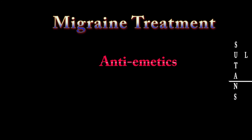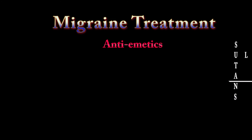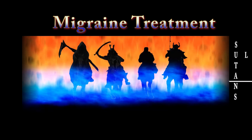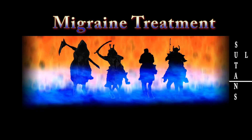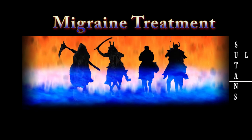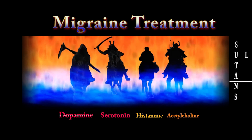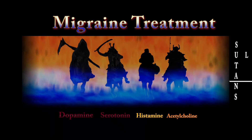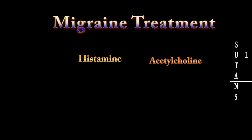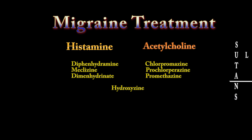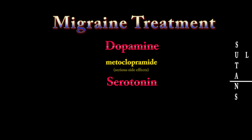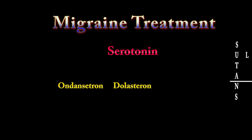Anti-emetics: nausea and vomiting are a common feature in migraine. There are four key neurotransmitters that act in two separate zones — these are worth memorizing. They are dopamine and serotonin, and histamine and acetylcholine. The antihistamines and anticholinergics are cheaper and older, but still an option. Hydroxyzine is sometimes given as an injectable for migraines. The newer medications that specifically block serotonin receptors are the most expensive, and include ondansetron, dolasetron, and granisetron.